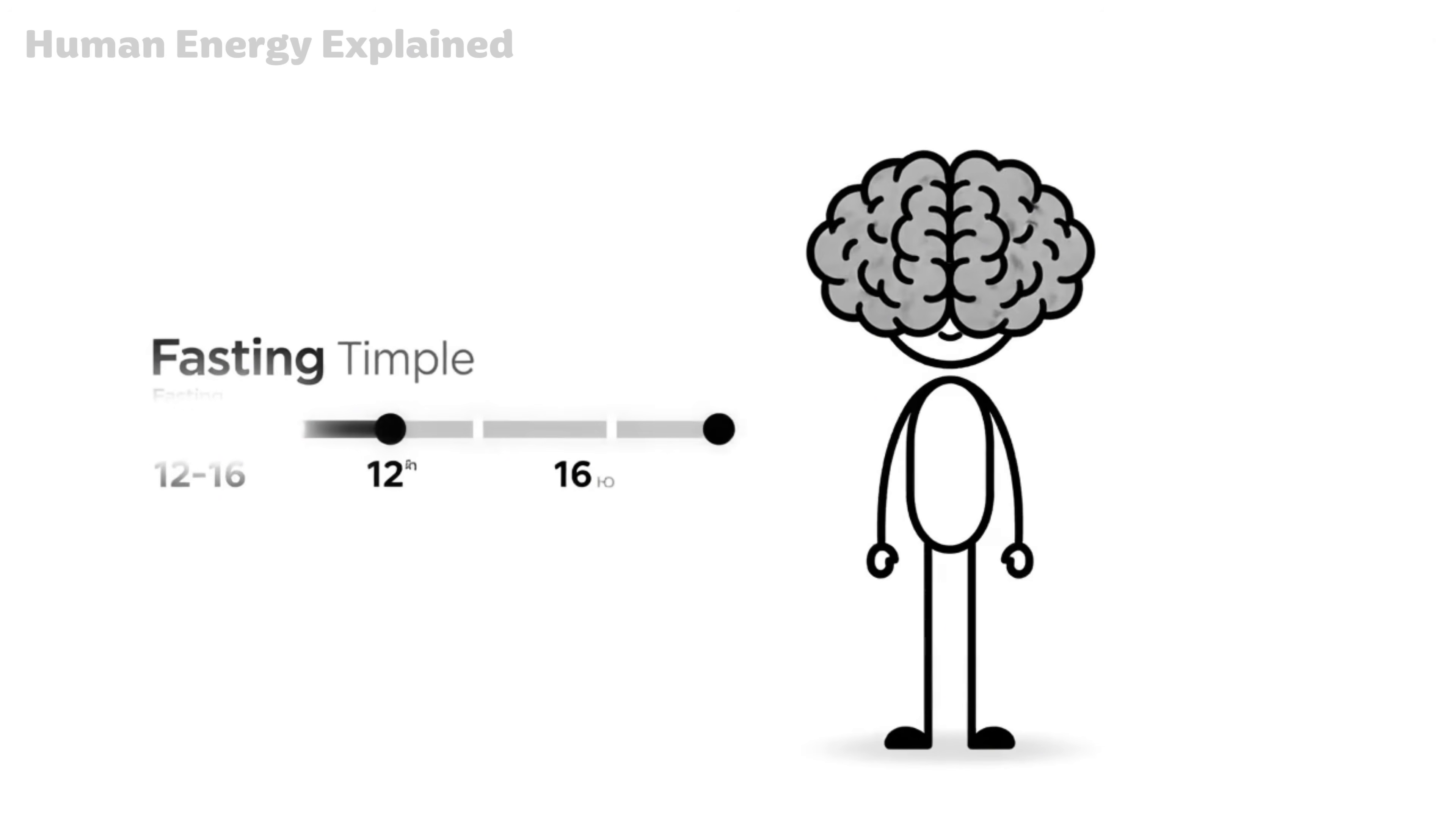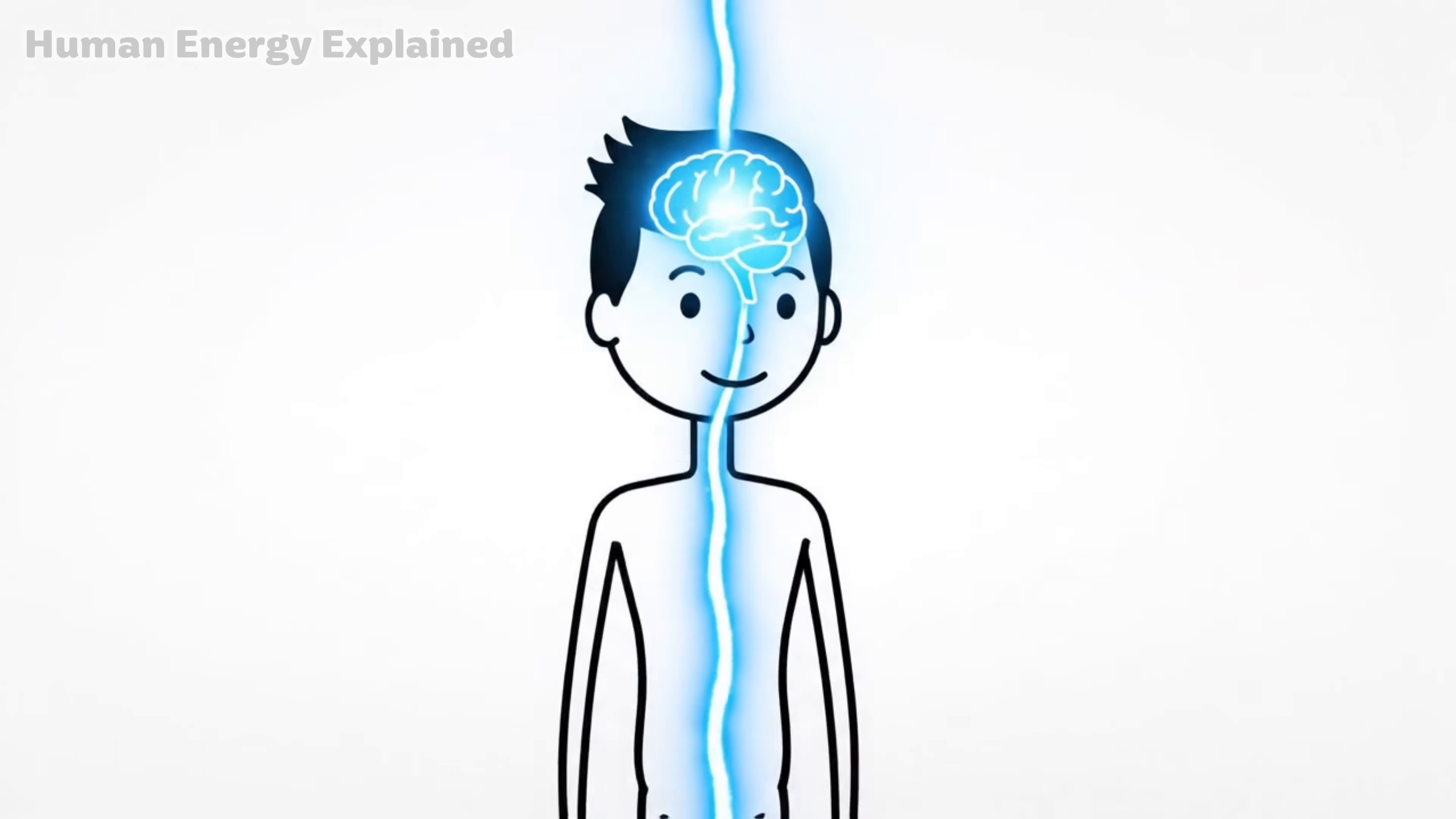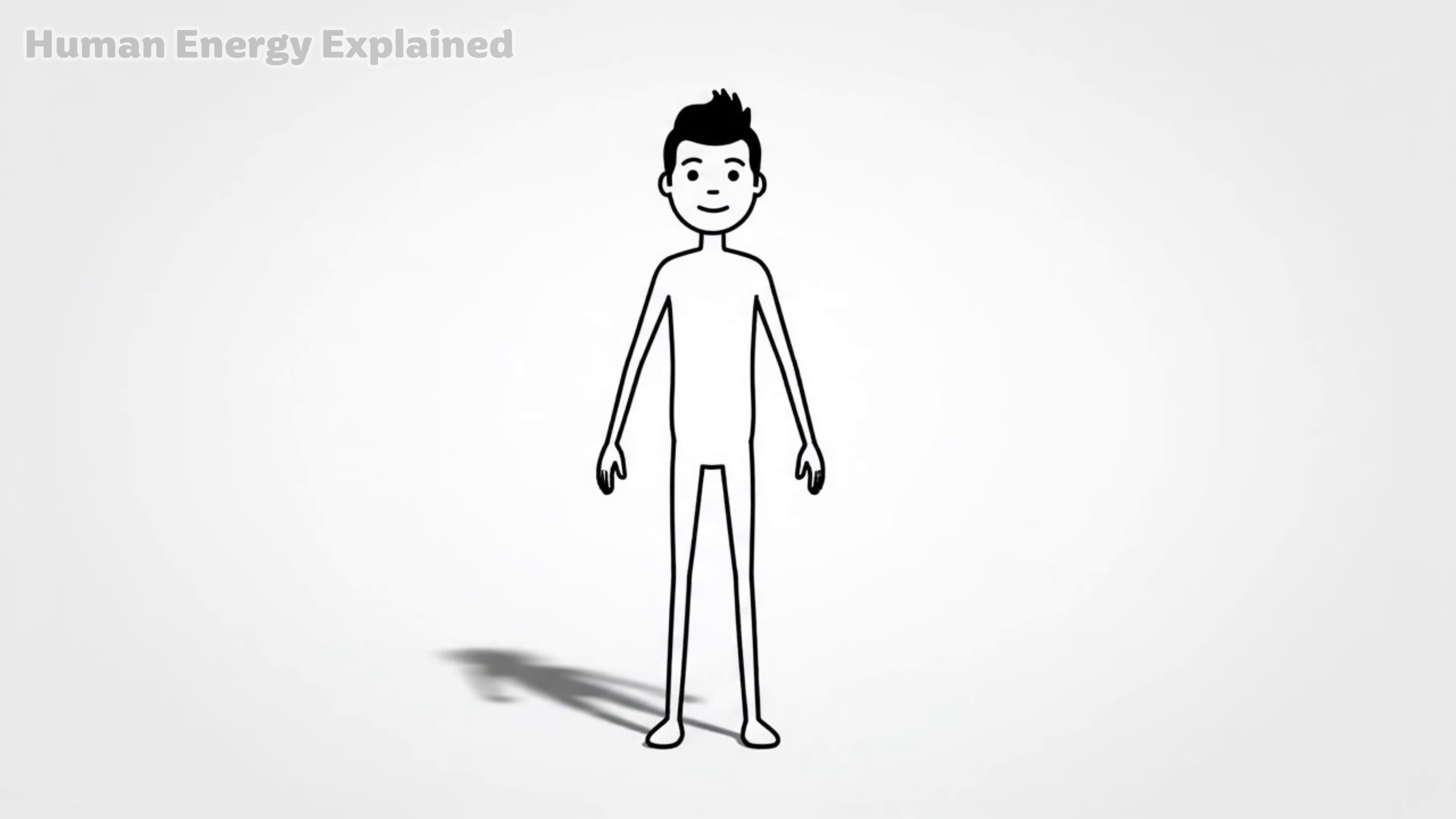Between hours 12 and 16, many fasters report something they didn't expect. The fog lifts, focus sharpens, a strange calm settles in. You're not bouncing between sugar highs and crashes anymore. Your brain is running on steady fuel, and it shows. Tasks feel easier, distractions fade. Some people describe it as entering a flow state without trying.